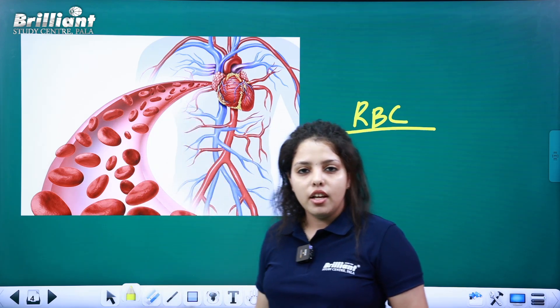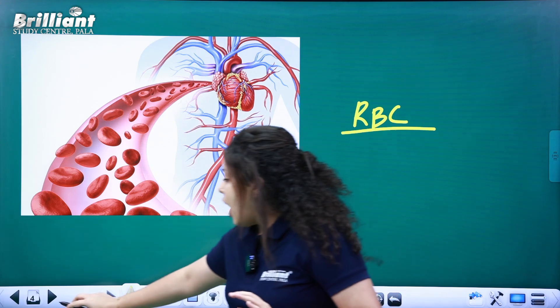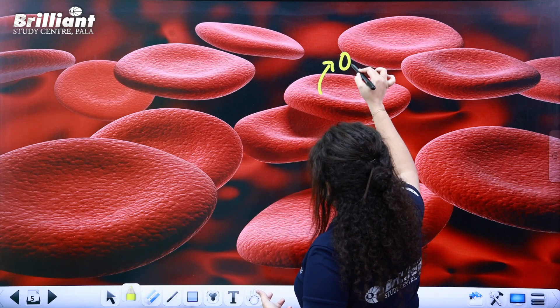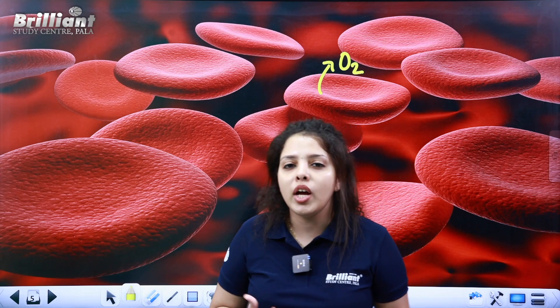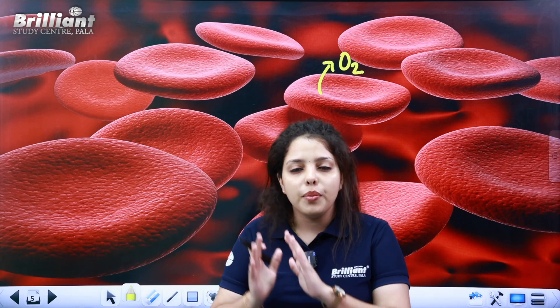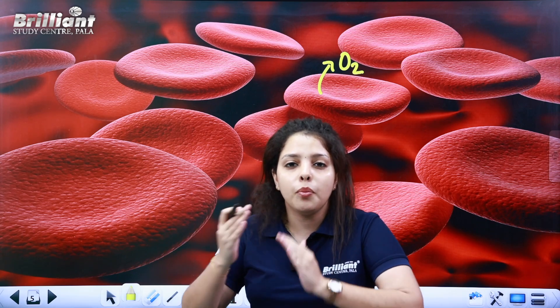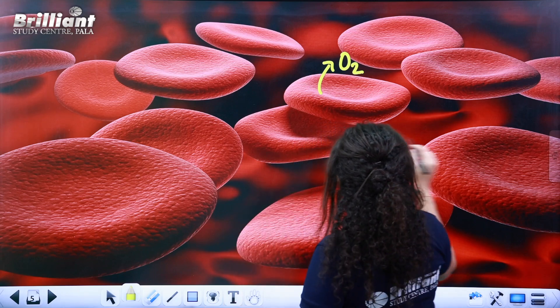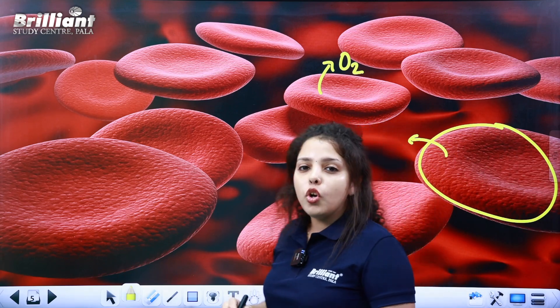That is RBC — red blood cells. This is a red blood cell. A disc shape is the form of a red blood cell. What do you do with RBC? RBC has an oxygen carrying capacity. We have a major function of RBC. If we have oxygen, we will carry it. In this RBC role, we have a hemoglobin element.